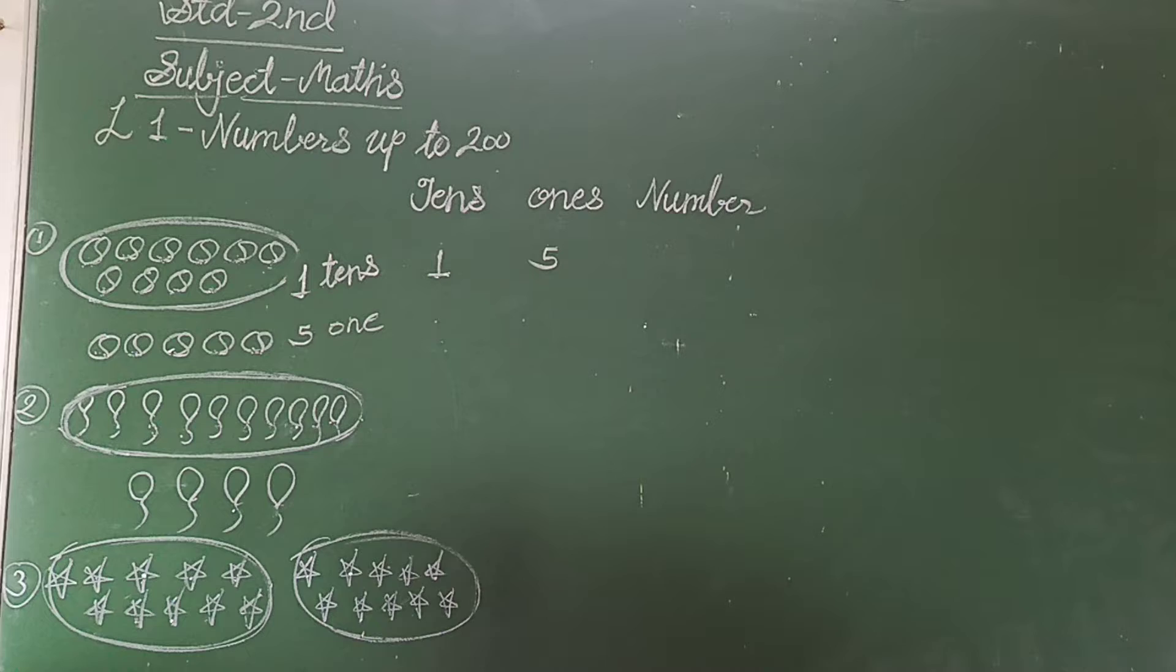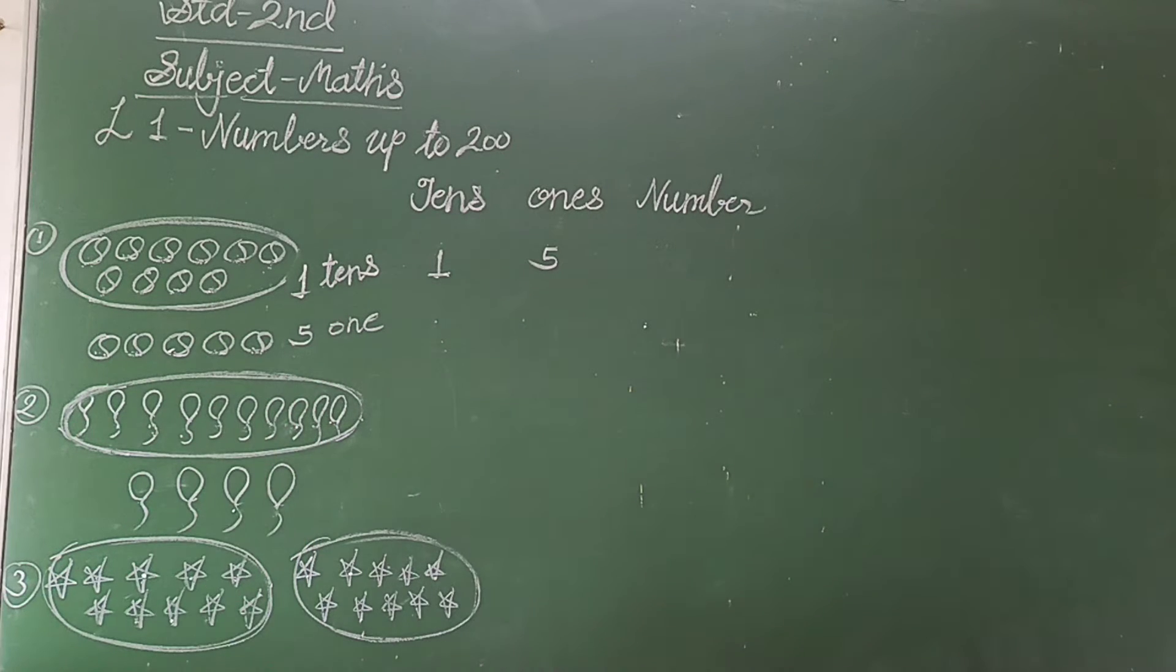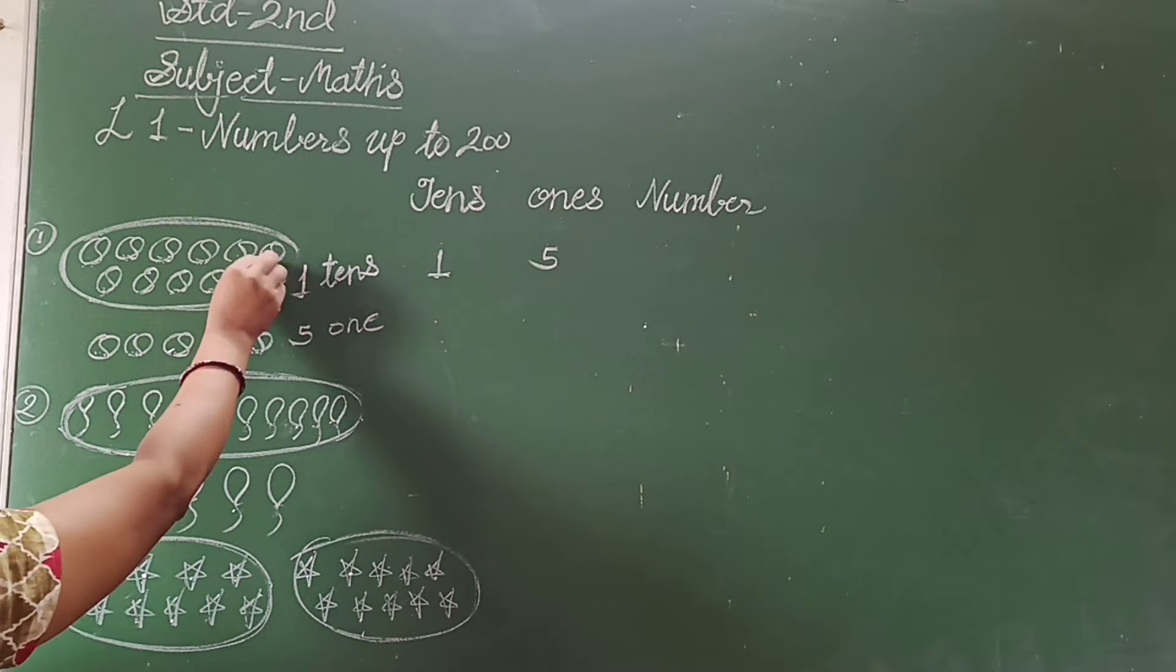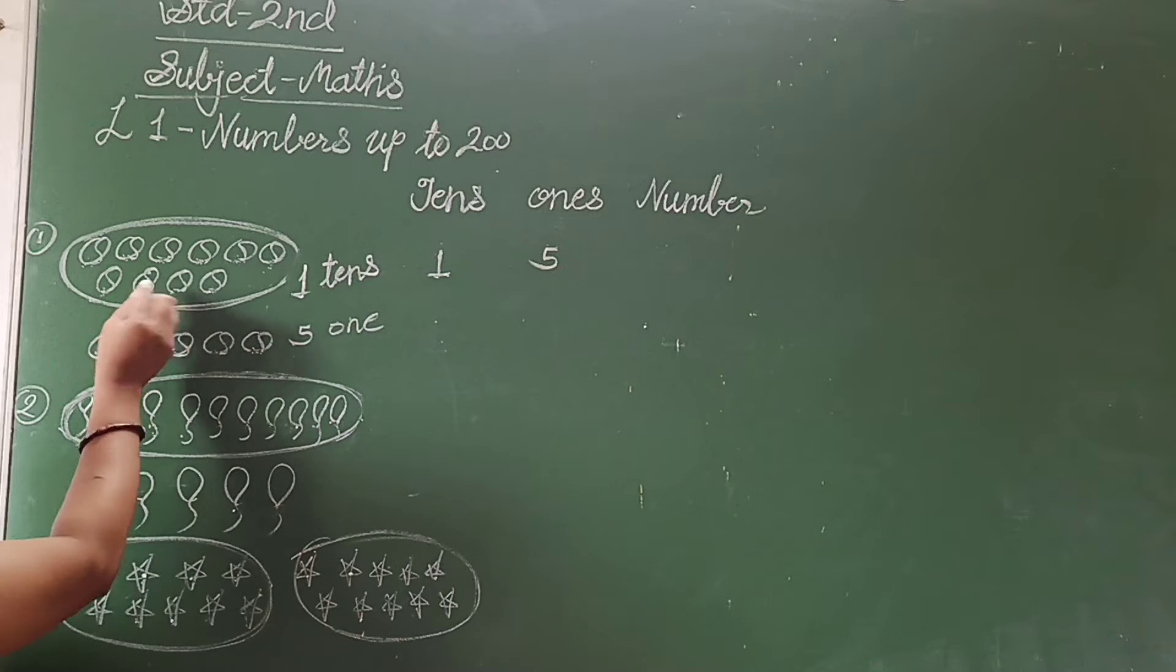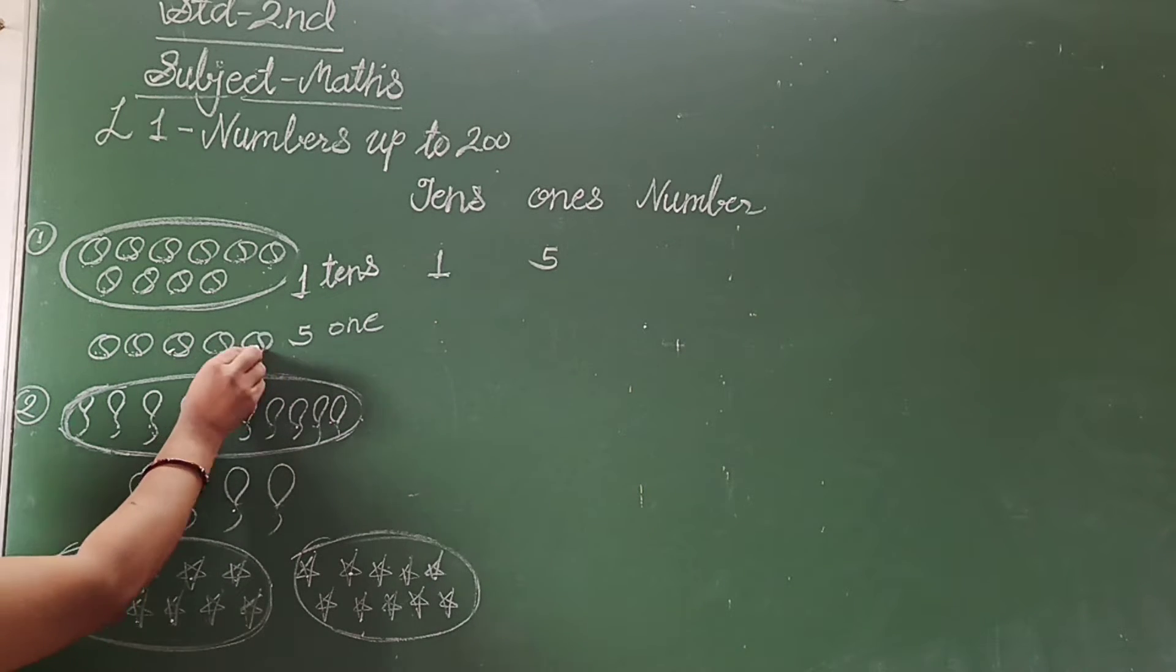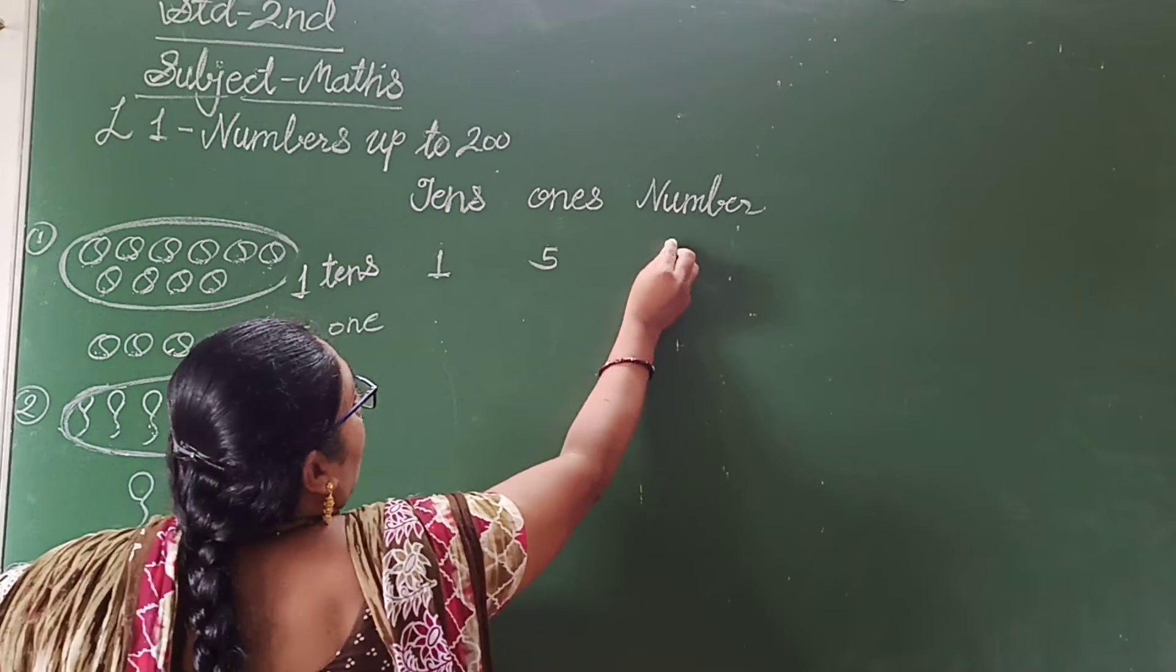Then now we will count the total number of balls. Count it 1, 2, 3, 4, 5, 6, 7, 8, 9, 10, 11, 12, 13, 14 and 15. So total I have 15 number.